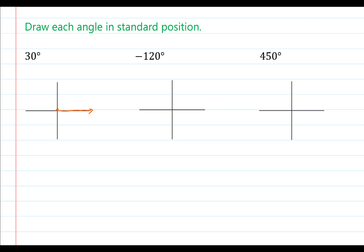I'm going to identify what each of my axes represents in terms of degrees. The positive x-axis represents zero degrees. The positive y-axis represents a 90-degree angle. If we rotate further to the negative x-axis, that represents a positive 180-degree angle. Then rotating to the negative y-axis represents a positive 270 degrees. And if we continue to rotate all the way back around to the positive x-axis, that represents a positive 360 degrees.